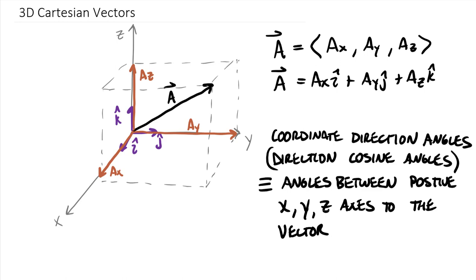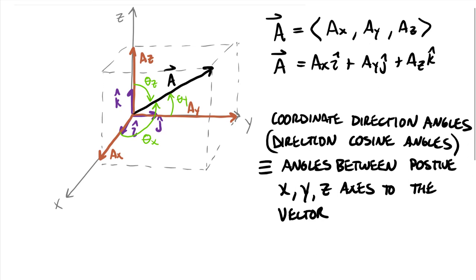These are not planar angles existing in the xy, yz, or any single plane — they actually wrap in three-dimensional space from the positive axes up to the vector. We label them theta_x (the angle from the positive x-axis to the vector), theta_y (from the positive y-axis to the vector), and theta_z (from the positive z-axis to the vector). So theta_x, theta_y, and theta_z are the coordinate direction angles.